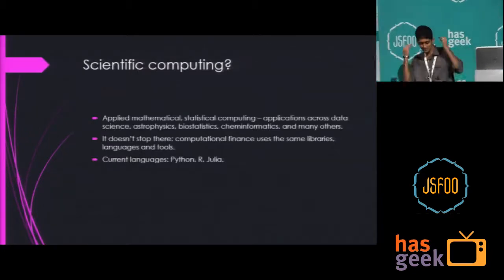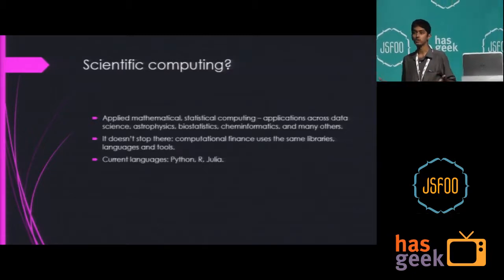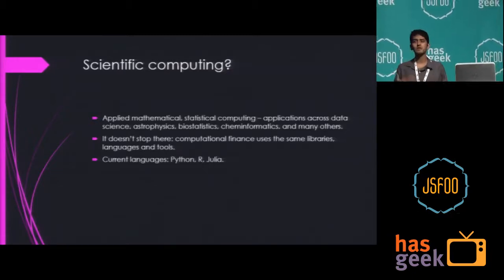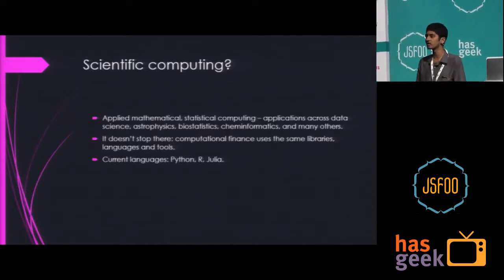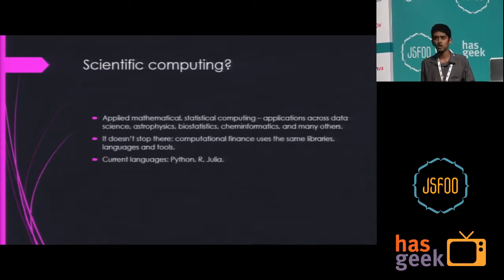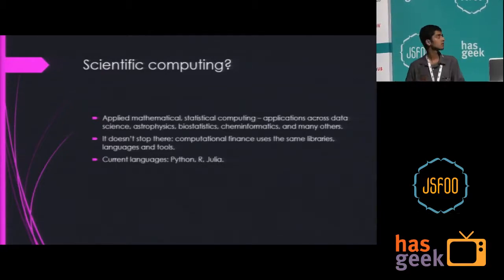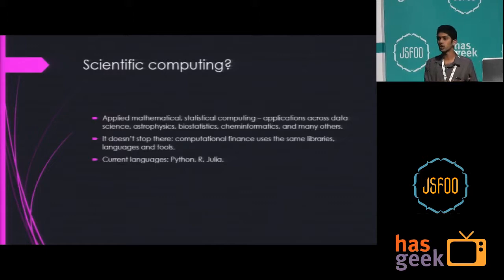What's the first thing that jumps into mind when you say scientific computing? It's basically about applied mathematics, applied statistics, data science — which is going crazily huge today. It's got a lot of applications across astrophysics, bioinformatics, genome sequencing, trying to figure out what diseases you might get later in your lifetime. That's biostatistics. And informatics — trying to analyze chemical elements in multiple compounds, things like that.